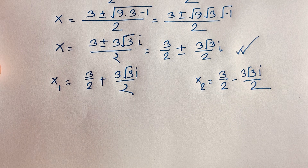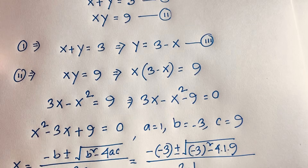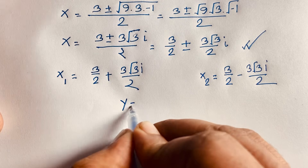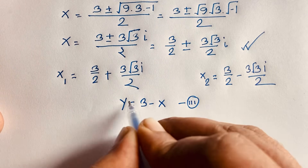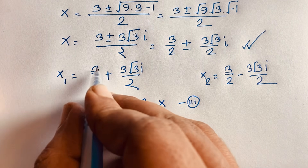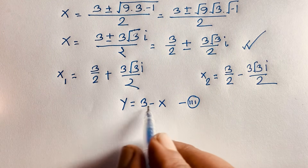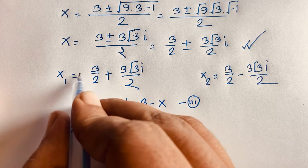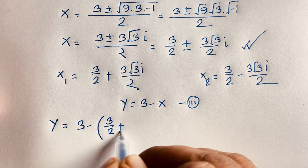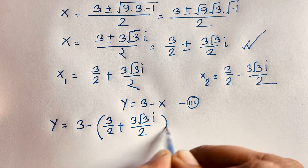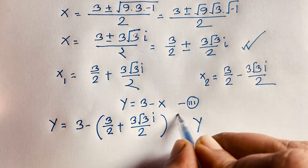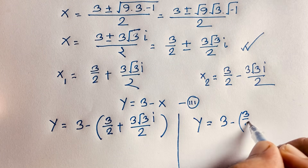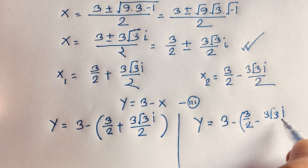Recall that from our third equation, y is equal to 3 minus x. So I can find y by substituting each x value. When x equals 3 over 2 plus 3√3·i over 2, we compute y equals 3 minus that value: 3 minus (3 over 2 plus 3√3·i over 2). And for the other case, y equals 3 minus (3 over 2 minus 3√3·i over 2).